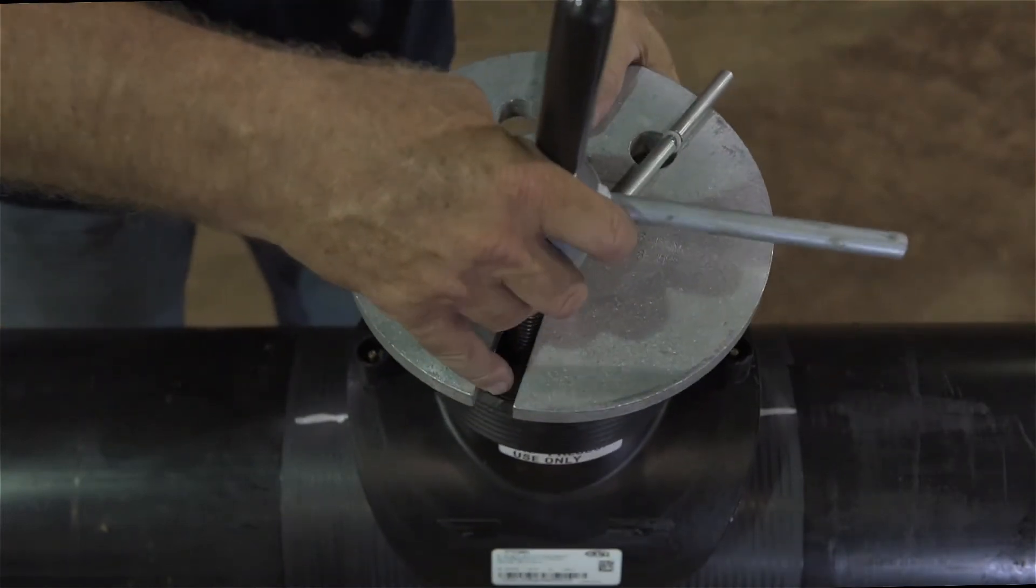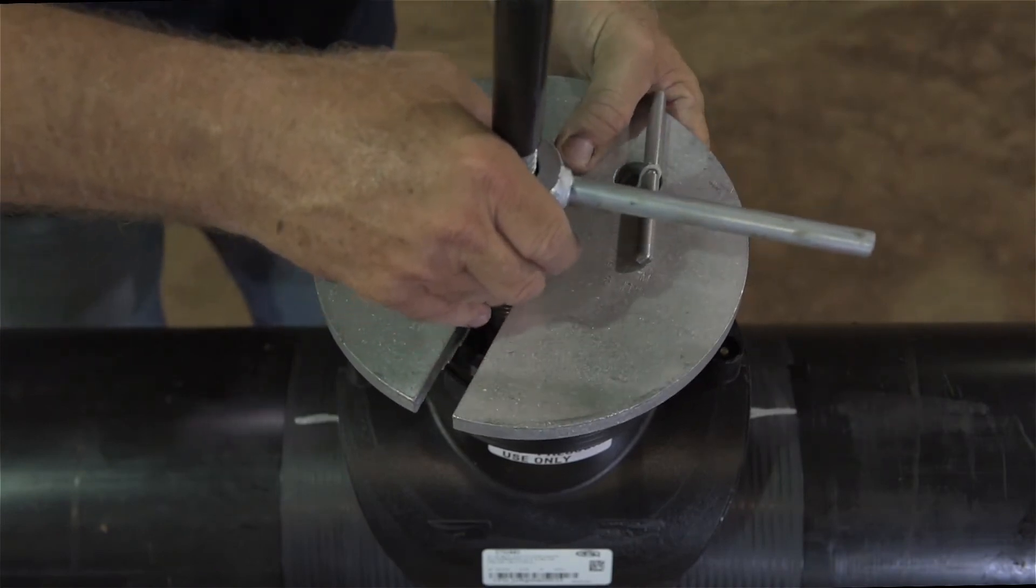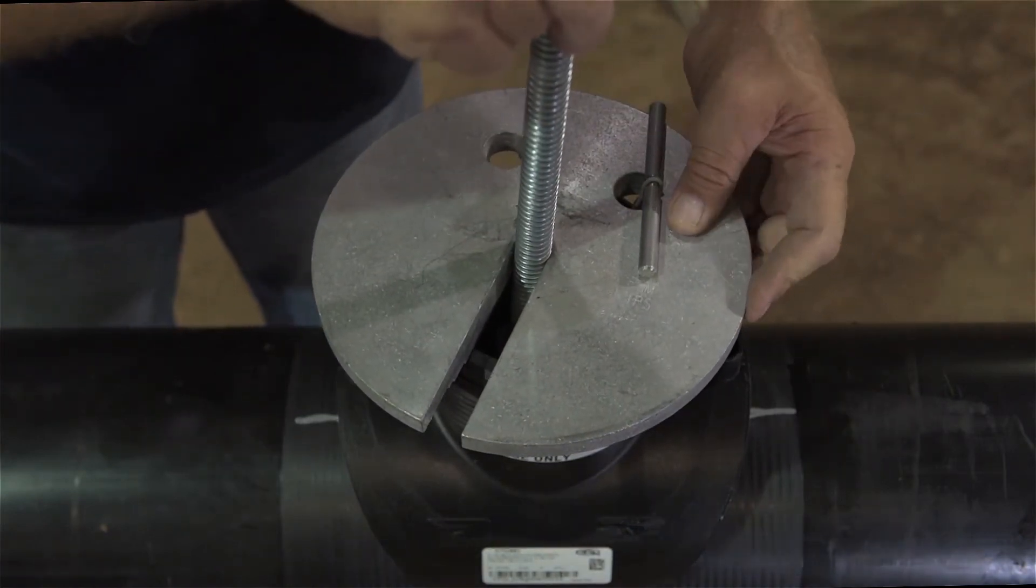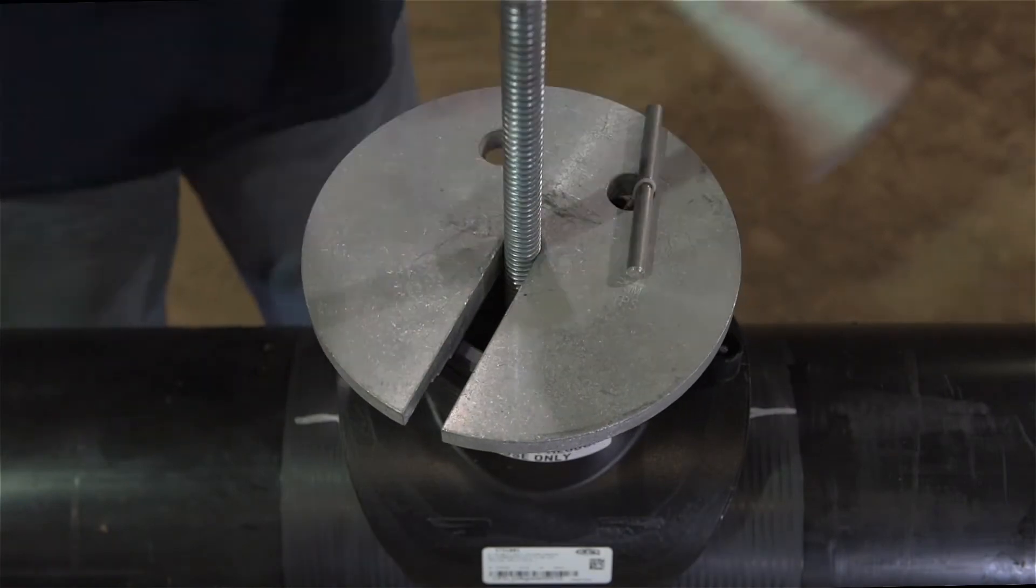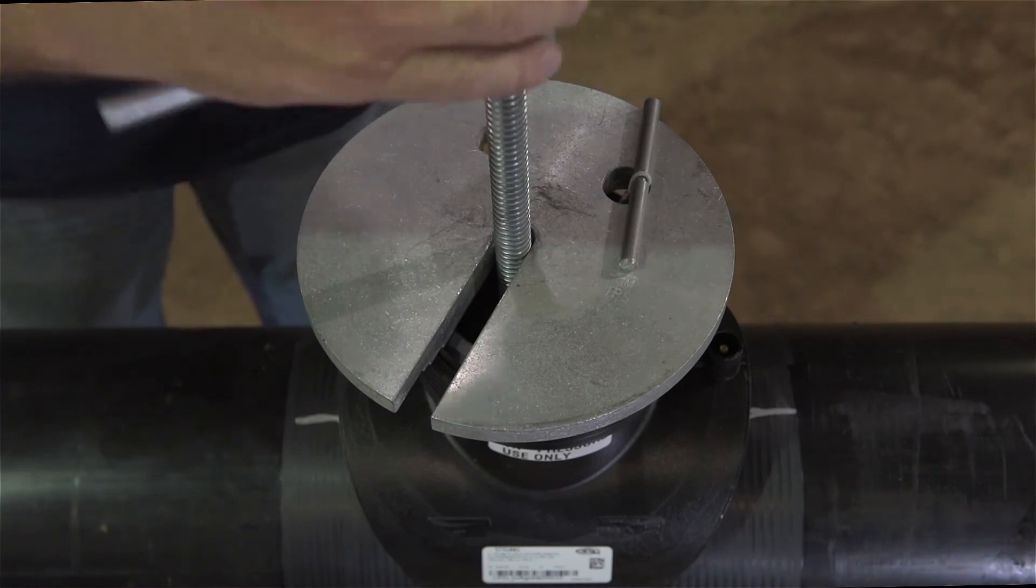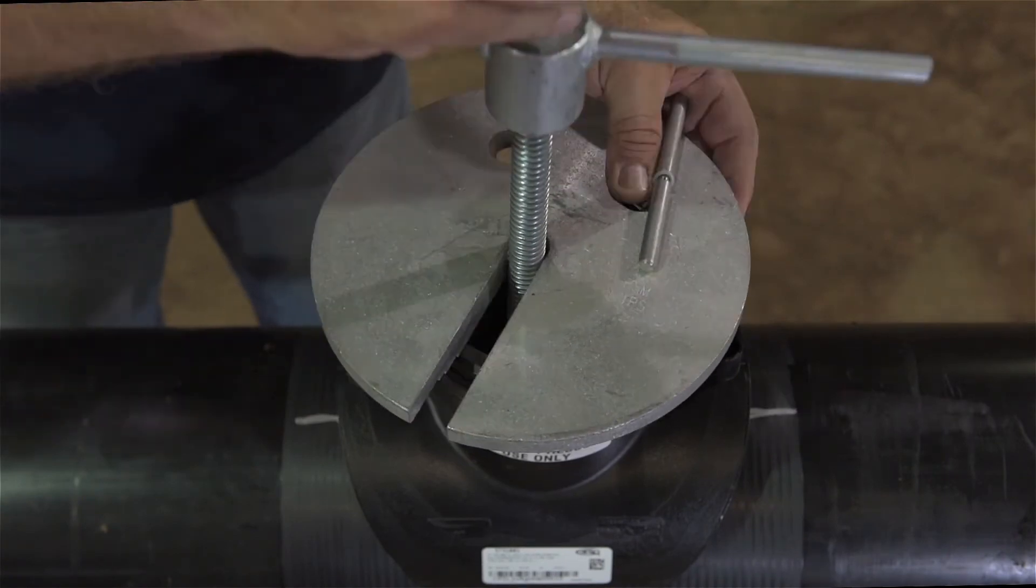Fit the clamp cap to the top of the fitting and tighten the clamp by turning the handle clockwise on the screw shaft. Continue until the branch saddle is firmly fitted to the main.